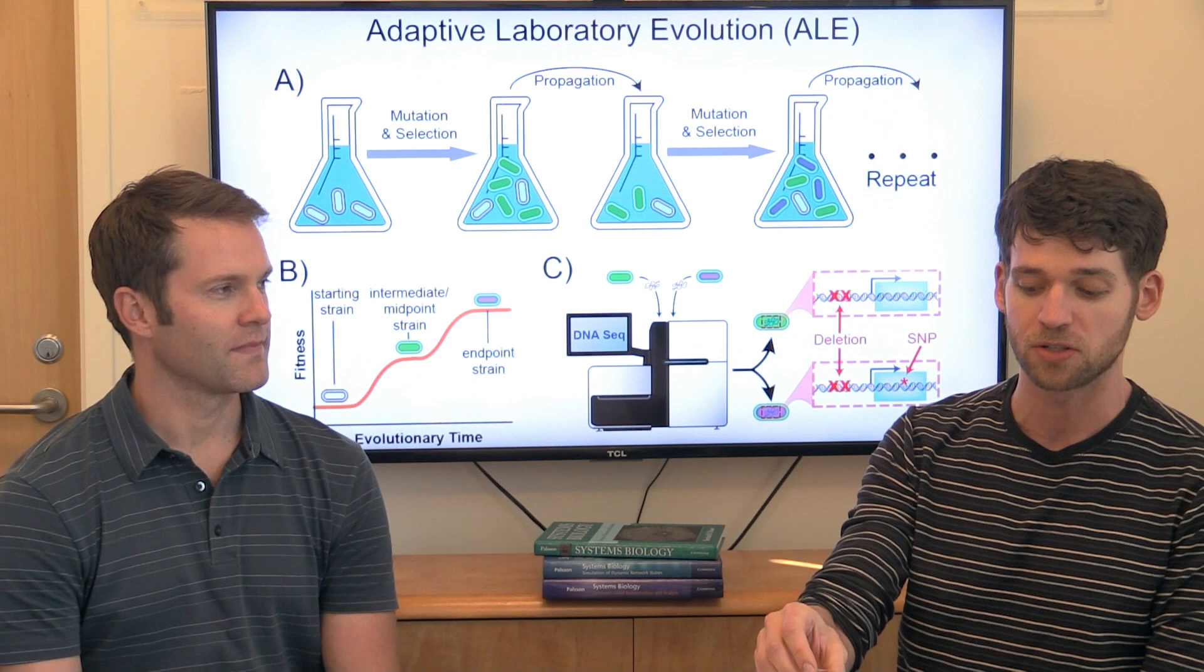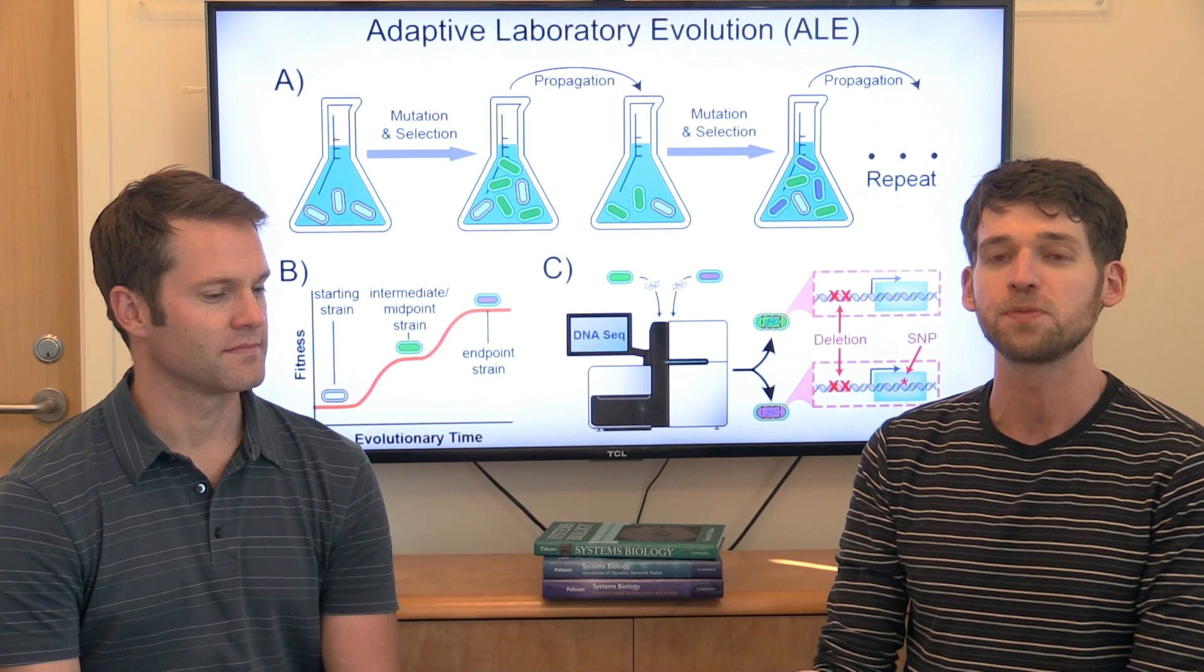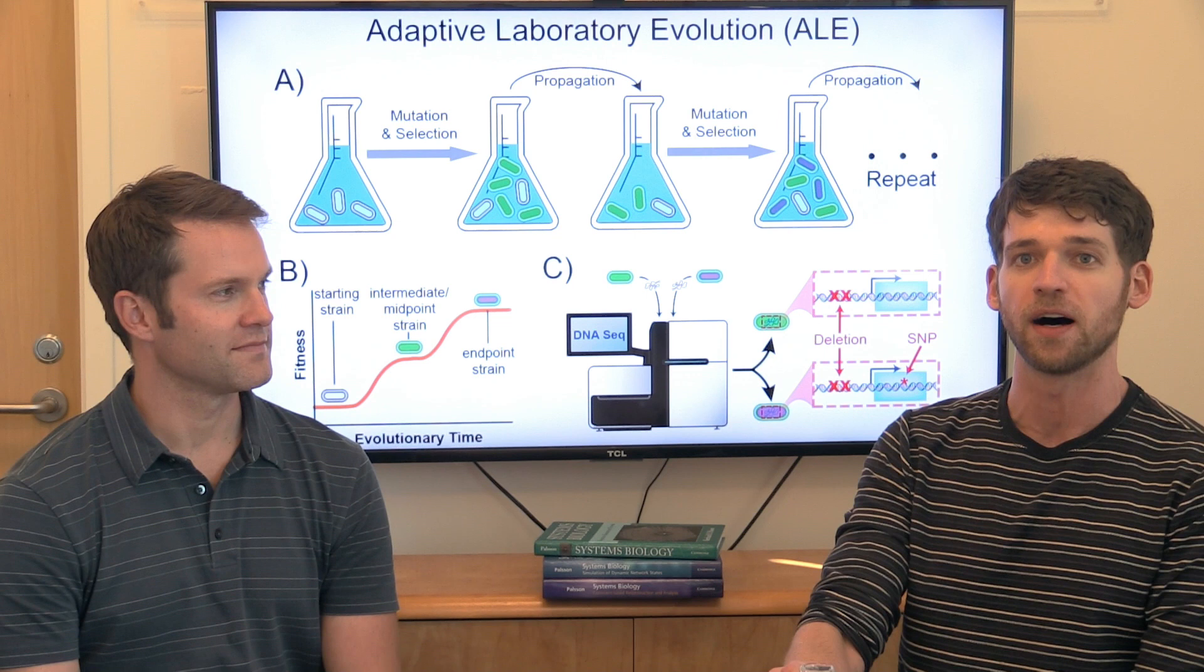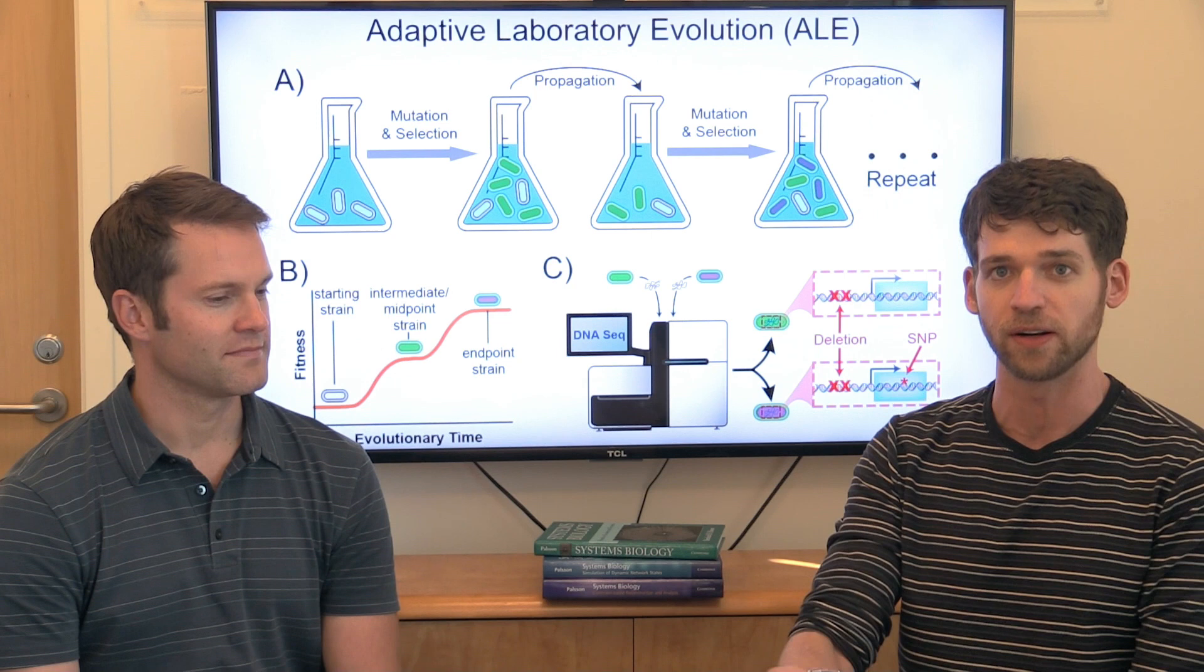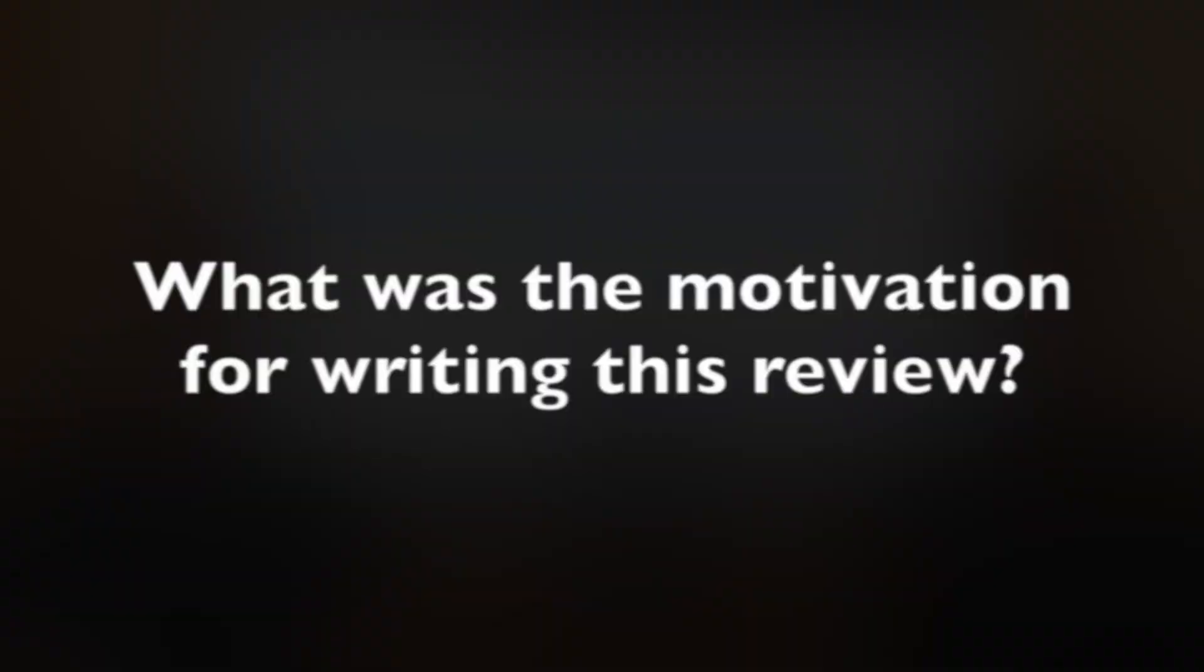because in a single tube of growth we are sampling hundreds of millions of mutations and as they grow the bacteria are competing against each other and whichever ones happen to have adaptive mutations will take over the population and then we can isolate those and use them for various purposes.